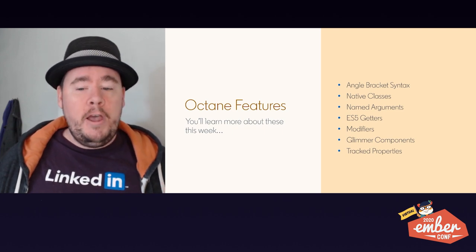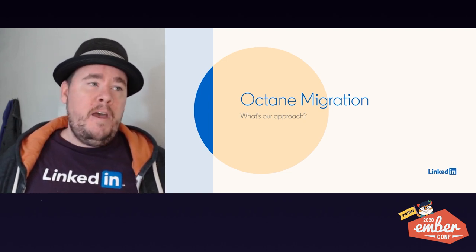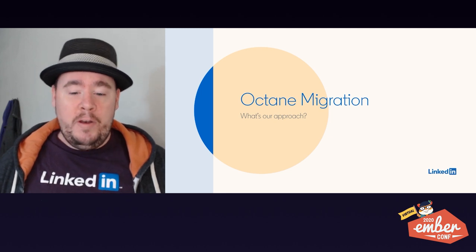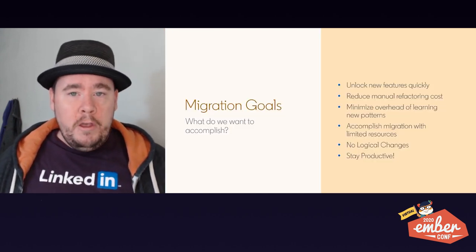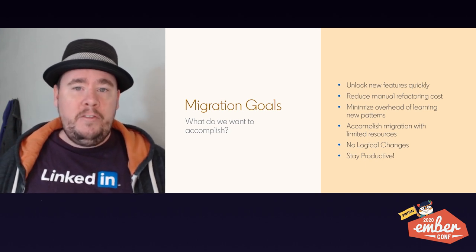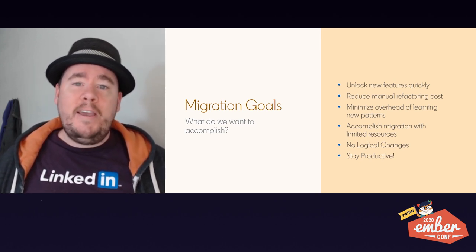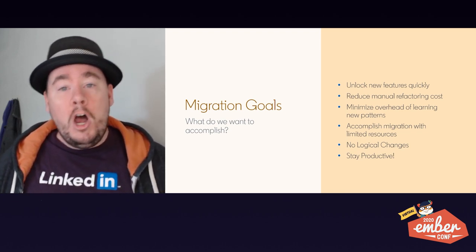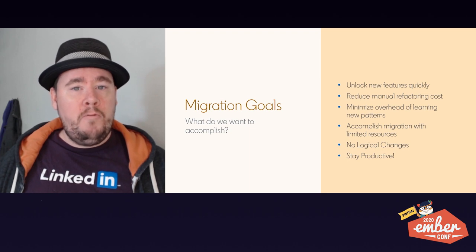When we thought about tackling Octane migration for our code base, we had to design an approach that fit our team. What is it that we actually want to accomplish as a community as we're migrating to Octane? Well, we want to unlock new features quickly — everybody has the opportunity to use new features if we make them available in the code base, and that's a great way to improve developer happiness. Additionally, we want to reduce the manual refactoring cost. Anything that can be automated should be automated. We also need to minimize the overhead of learning new patterns — we don't want to dump a ton of new stuff on our developers all at once. It's better to introduce things in chunks so that people can get used to the new way of writing code in Ember.